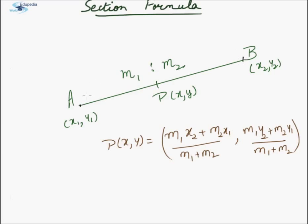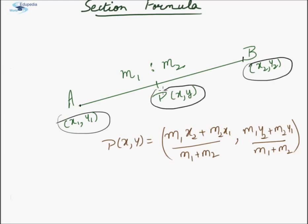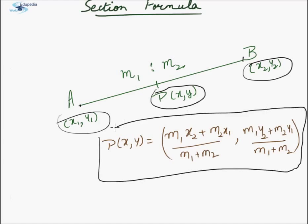If we have a line segment AB with coordinates of the terminal points, and P is a point which divides line segment AB in ratio M1:M2, then according to the section formula, the coordinates of P are given as ( (M1·x2 + M2·x1)/(M1+M2), (M1·y2 + M2·y1)/(M1+M2) ). This is the x-coordinate and this is the y-coordinate of P.